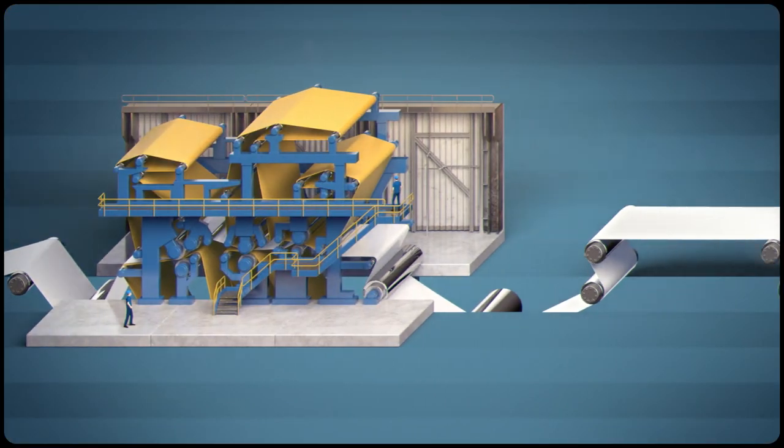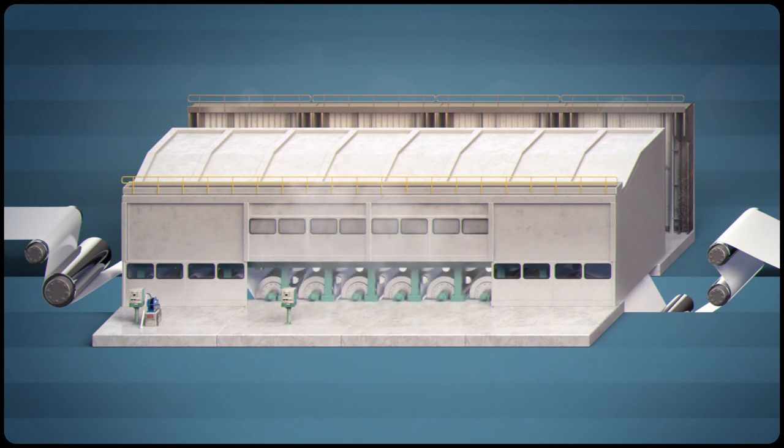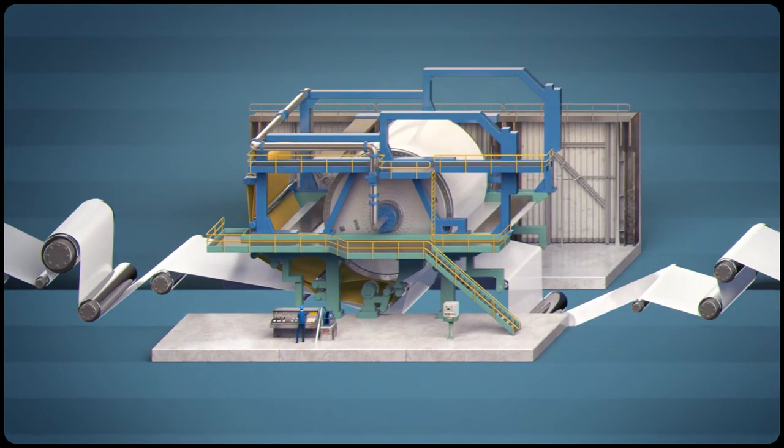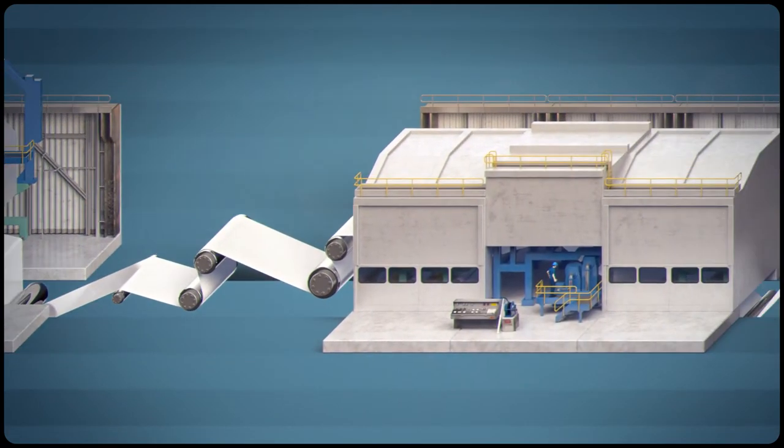Then comes the drying section, where the board passes over steam-heated polished cylinders which gradually further reduce its moisture. Important strength properties are established here. The steam-heated machine glazing cylinder dries the web without any loss of thickness, ensuring excellent stiffness properties. This surface treatment is key for producing top-quality folding boxboard.